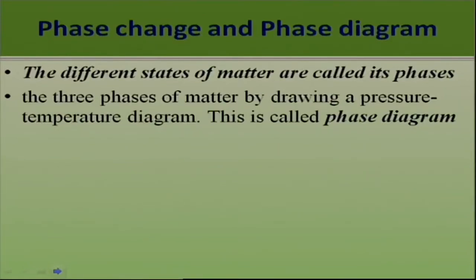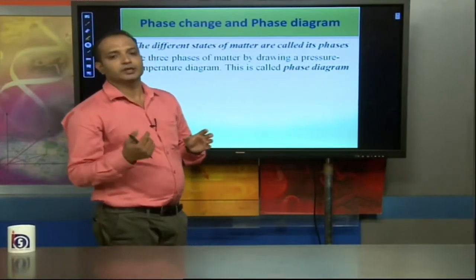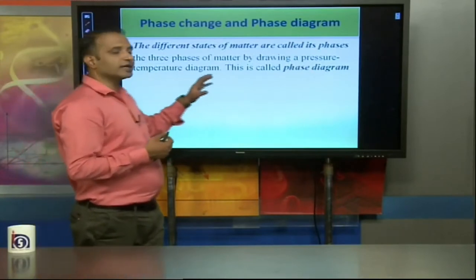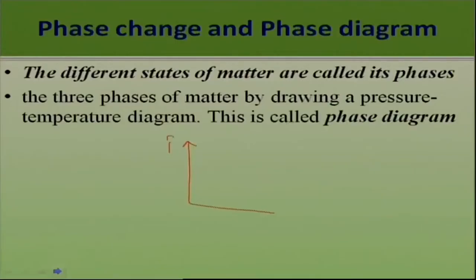In thermodynamics, the three types of matter — Solid, Liquid, and Gas — are called phases or paths. By drawing a pressure-temperature diagram for the three phases of matter, we get what is called a phase diagram. When we plot a graph between pressure and temperature, that is called a phase diagram. In the indicator diagram we plotted P vs V, but for the phase diagram we plot P vs T.